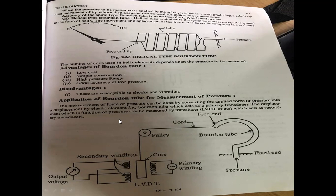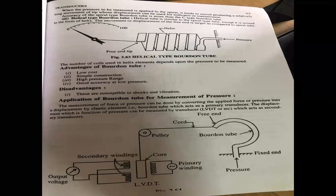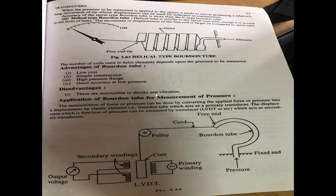The advantages of the Bourdon tube are that the cost is very low, construction is very simple, and it can be used for both high and low pressure ranges with very high accuracy. The disadvantage is that shock or vibration can change the position of the helix element.